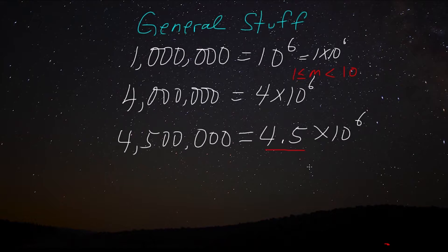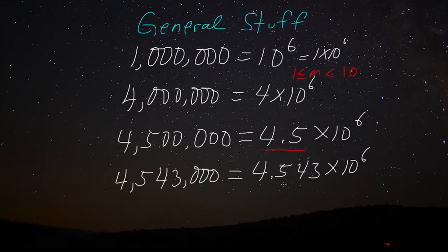Now the cool thing about this is that we can get even more specific. And we could even say 4.543 million, right? 4,543,000. So once again, we have our multiplier, which is still going to be greater than or equal to one, but always less than 10. And we can just simply express the rest of the digits that are not zeros as decimals after the primary multiplier.